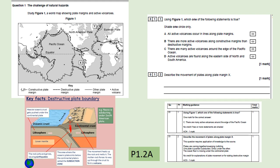The correct answer is that there are many active volcanoes found around the edge of the Pacific Ocean — this is called the Ring of Fire because there's a whole range of destructive plate boundaries there. For question 1.2, which asks to describe plate movement along plate margin X: X is a destructive plate margin. The answer is that two plates move towards each other; the ocean crust is denser than the continental crust, moves towards it, and is pushed down and subducted. The key points are plates colliding, and ocean floor being subducted under the continental plate.